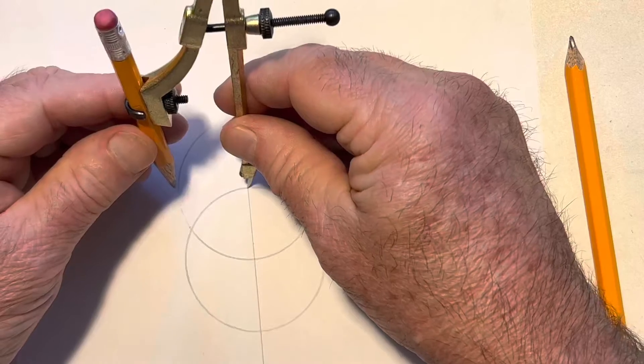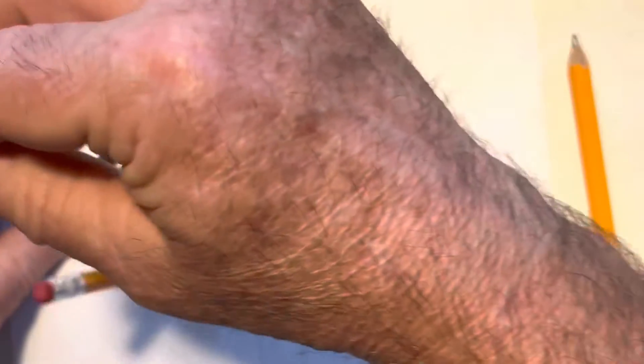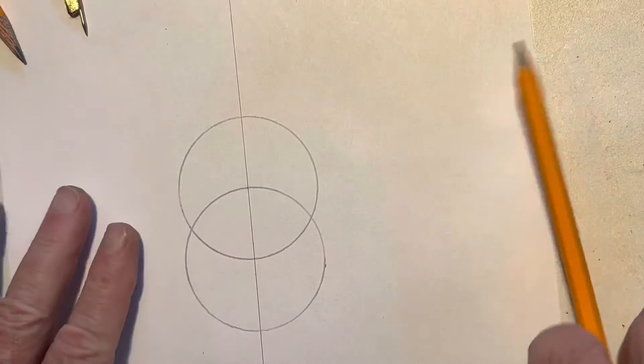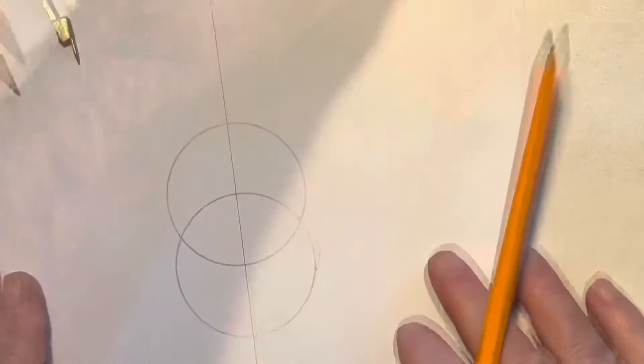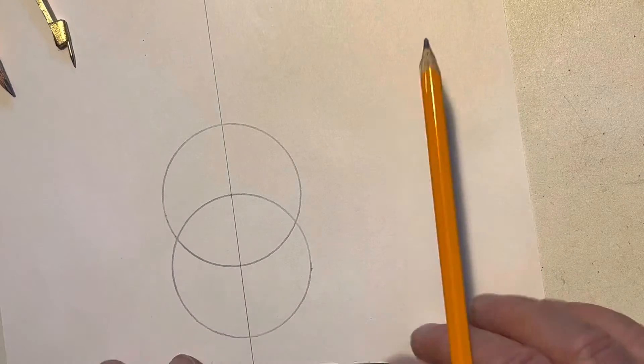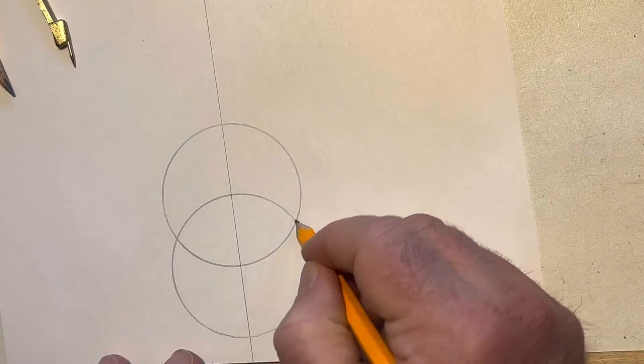Excuse my hand, but it's just easier to turn the circle that way. Okay, now we've got our vesica piscis. I'm going to go ahead and make my perpendicular line and connect the two points that it forms naturally.